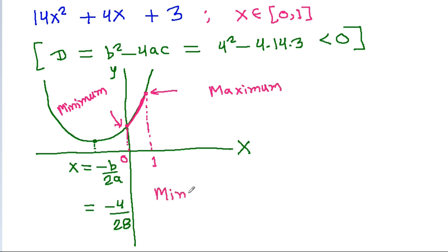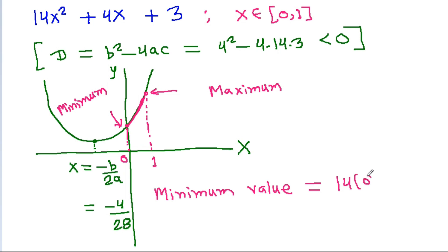The minimum value is 14 times 0 squared plus 4 times 0 plus 3, which equals 3.